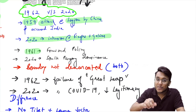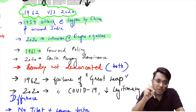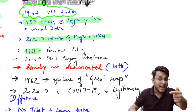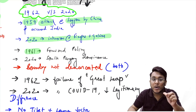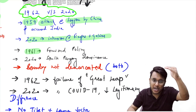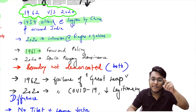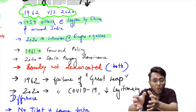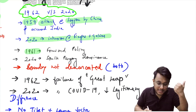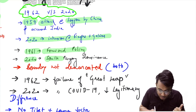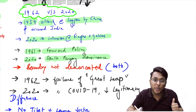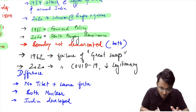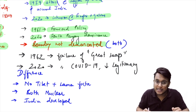In 1961, India started the Forward Policy — establishing posts and consolidating positions. Similarly in 2020, through the Quid Pro Quo strategy, as China was making strategic positions toward the Fingers region, the Indian Army made a forward approach toward South Pangong and held the dominating ground. In 1962, the boundary was not demarcated — right now, boundary demarcation is also not accepted.